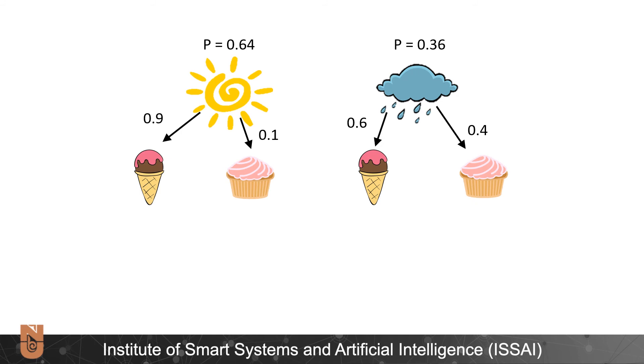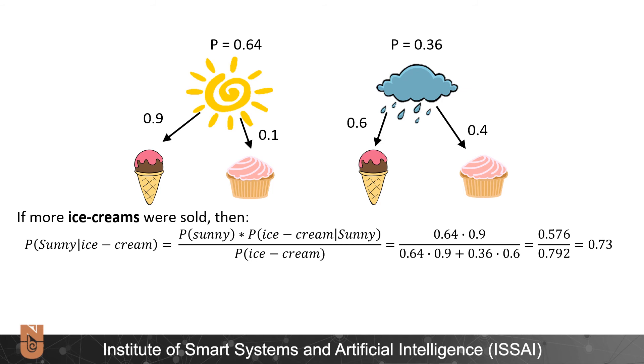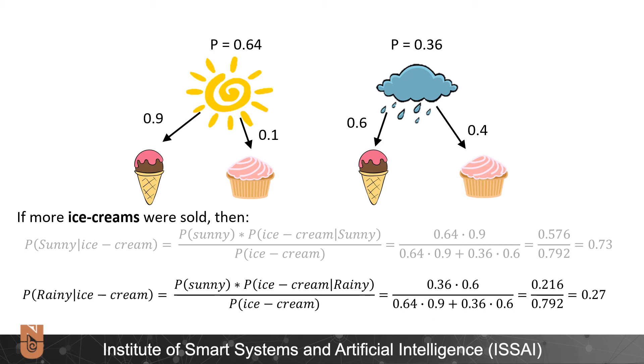So here we have our HMM model with emission probabilities illustrated. Probability of a sunny day given ice cream being mostly sold is equal to probability of a sunny day multiplied by probability of the ice cream given sunny day over probability of the ice cream being mostly sold. So we plug in numbers and we get 0.73. And the same for the rainy days.